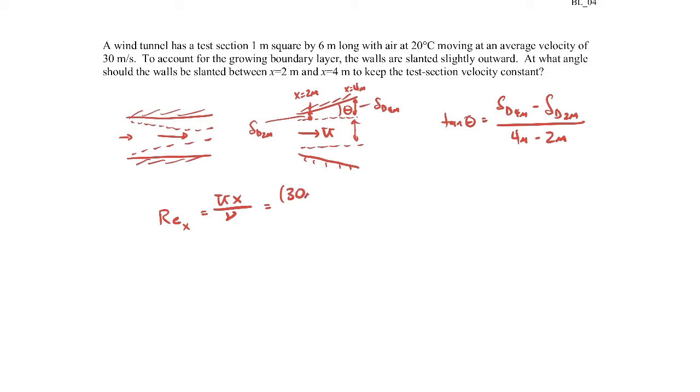So that'll be 30 meters times 2 meters, we're going to do it first at x equals 2 meters. And then if you look at the kinematic viscosity for air at this temperature, it's about 1.5 times 10 to the minus 5 square meters per second. So when you plug those numbers in, you'll get a Reynolds number of 4 million, 4.0 million.